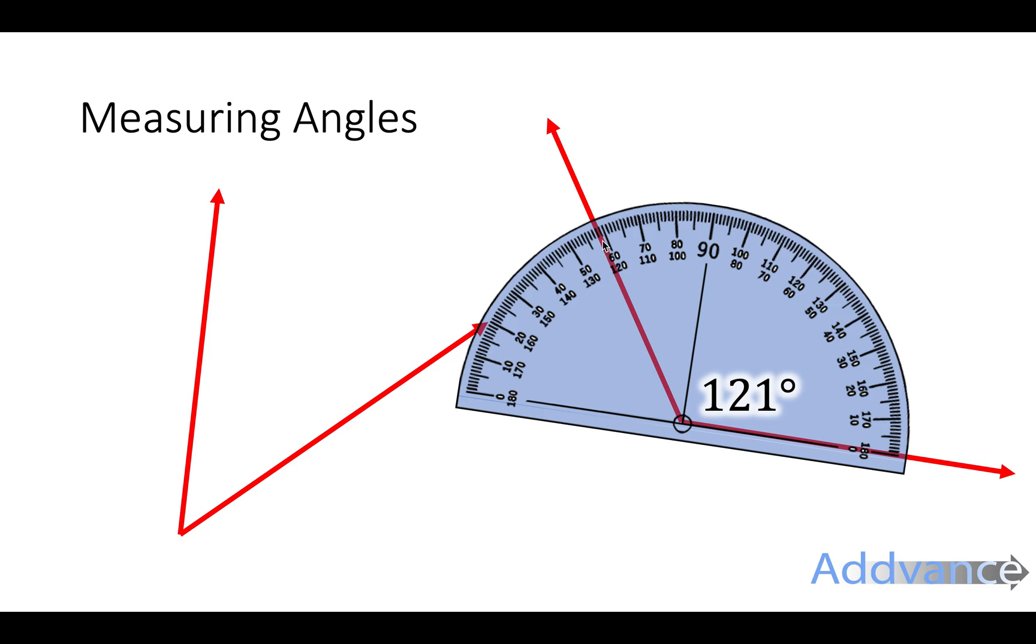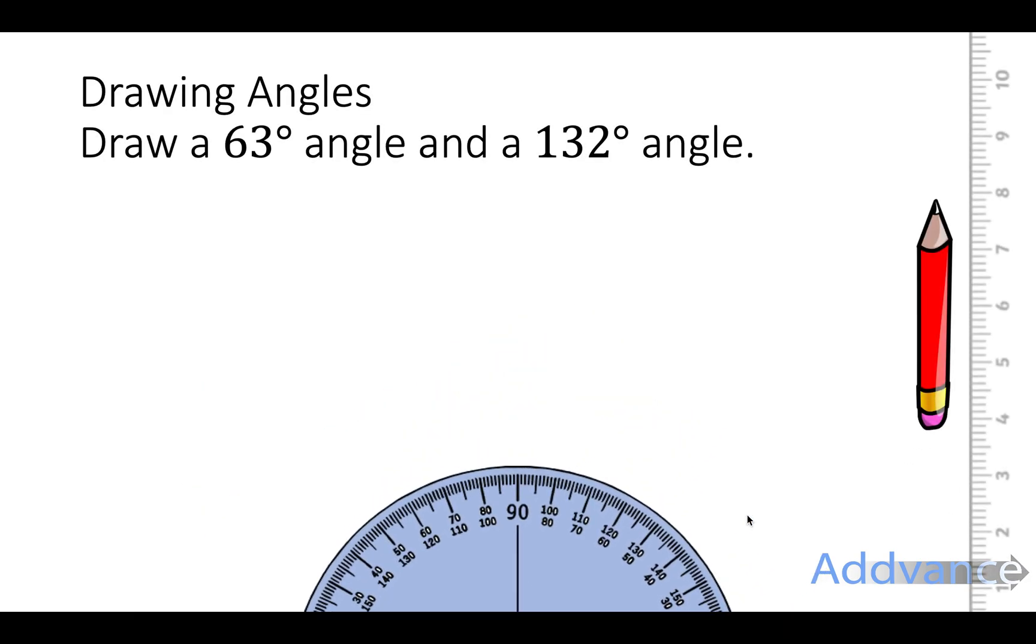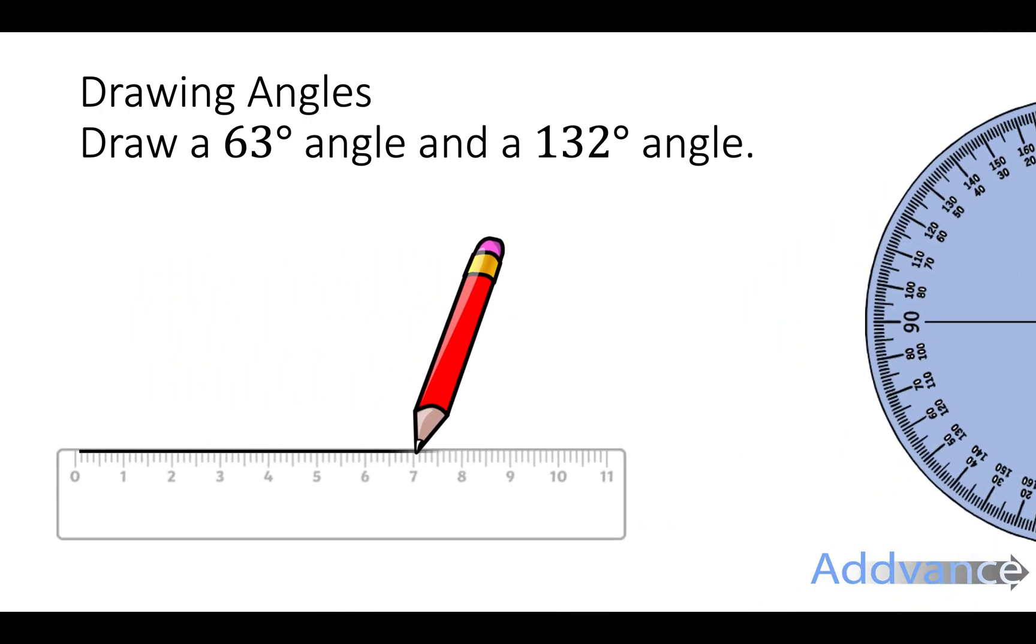Okay over here. Now we can also use a protractor to draw accurate angles. So we're going to draw a 63 degree angle. So first thing we do is we draw a line.